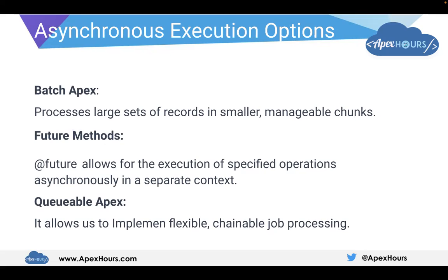What options do we have in asynchronous Apex? We have Batch Apex, to process large sets of records in smaller, manageable chunks. Batch Apex is for when we have to work on 1 million records — we cannot execute the business logic on 1 million records in one go. So we divide those 1 million records into small chunks and process them.